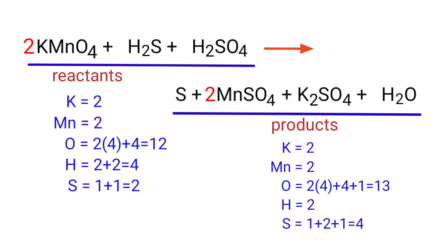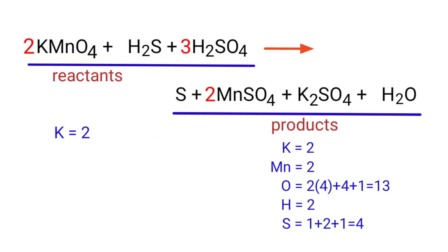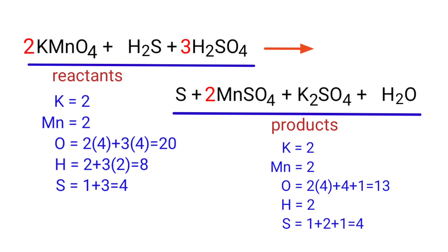The manganese atoms are balanced. Now we need to balance the sulfur atoms. To do this, we need to put a coefficient of three in front of H2SO4. The sulfur atoms are now balanced.